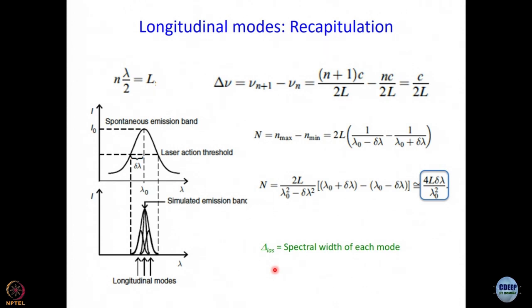Let us say that is delta less, spectral width of each mode. It's important to recognize that it is there. Now, next what I will do is I will take a little bit of a detour. We will come back to this mode locking business. Mode locking is a technique we want to discuss today by which you can produce ultra-fast pulses.